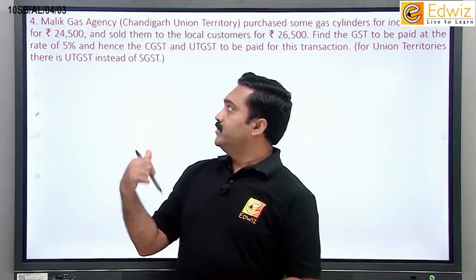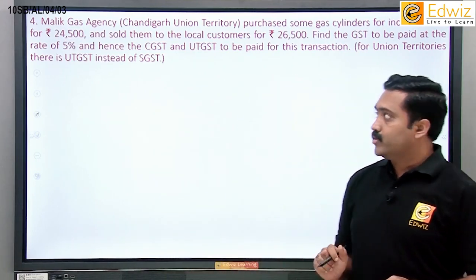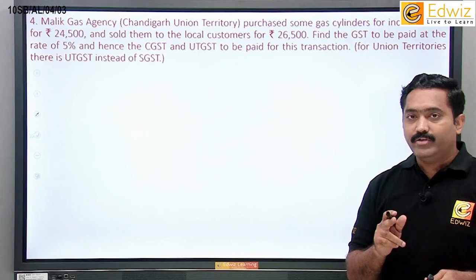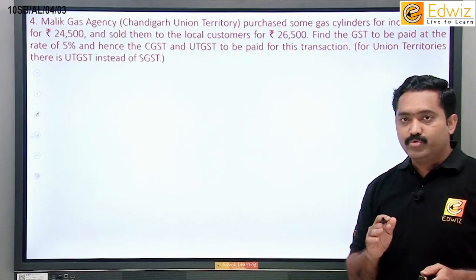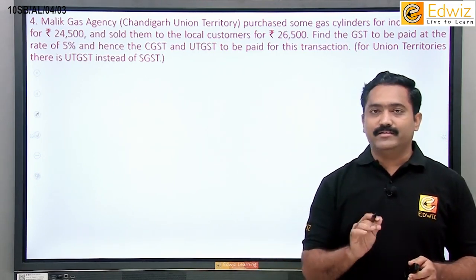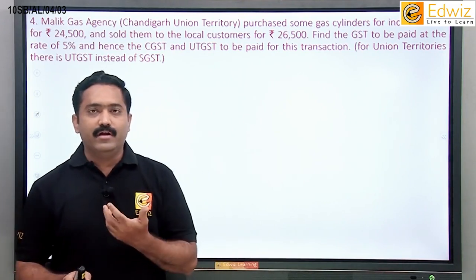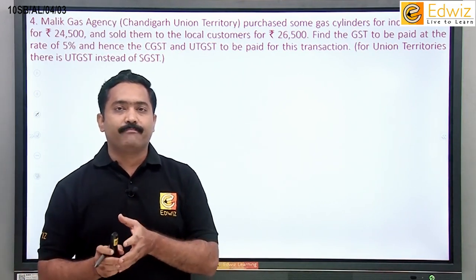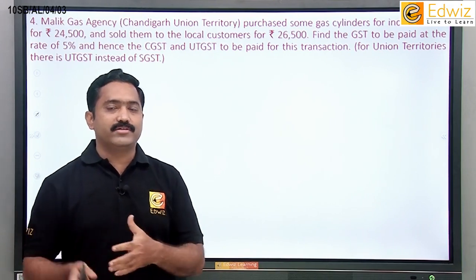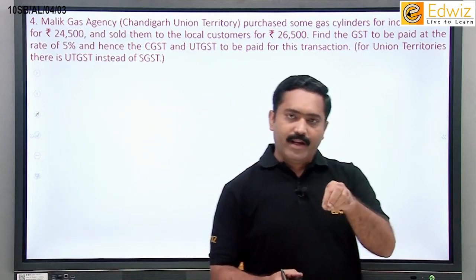We are now starting with the fourth question of practice set 4.2. The question is about Malik Gas Agency, Chandigarh — a Union Territory. When dealing with a state like Maharashtra or Karnataka, there is CGST and SGST. But when dealing with a Union Territory like Chandigarh, there is CGST and UTGST — Union Territory GST. The rest of the concepts and calculations remain the same.